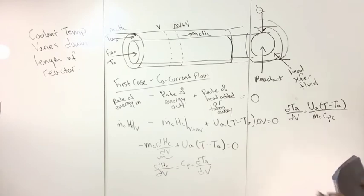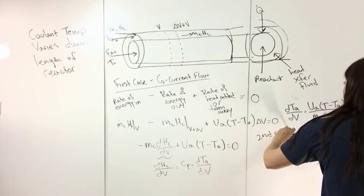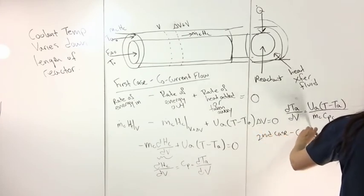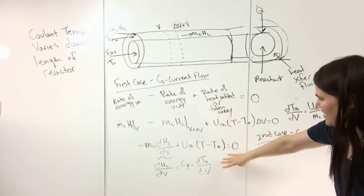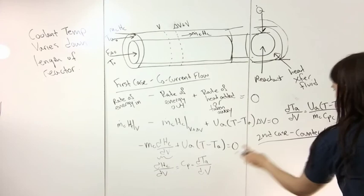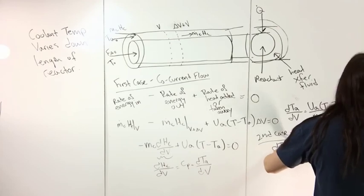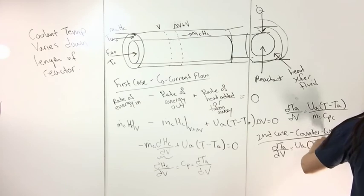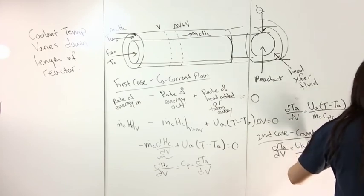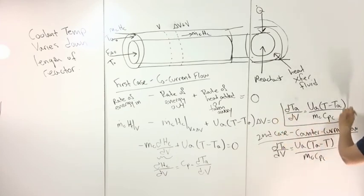I'm not going to go through the second case for the counter current flow again because it's basically the same thing, only you end up with your signs reversed. For the counter current flow you would end up with dTa/dV is equal to UA(Ta - T) over mass flow rate multiplied by cpc.